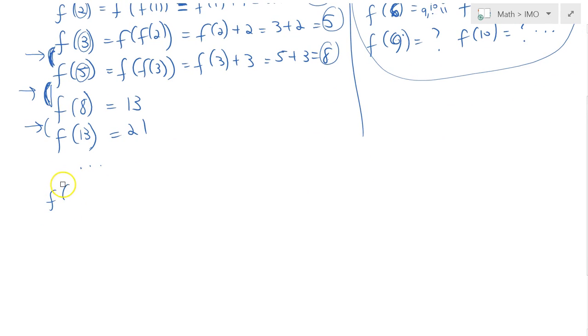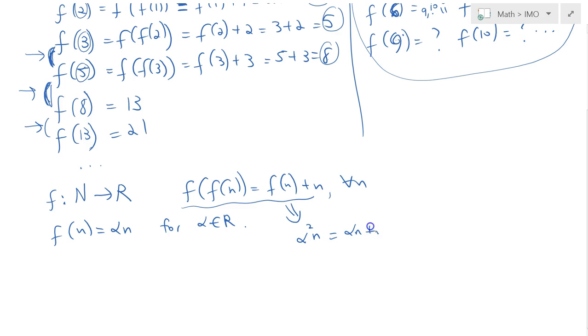So if the function was real valued, from natural numbers to reals, assuming it still satisfies f(f(n)) equals f(n) plus n for all n, then we would make the following guess. We would guess probably that f(n) equals alpha n for a constant alpha, which is real. Then this would imply that alpha squared n equals alpha f(n) plus n, which gives us alpha squared minus alpha minus 1 equals 0.